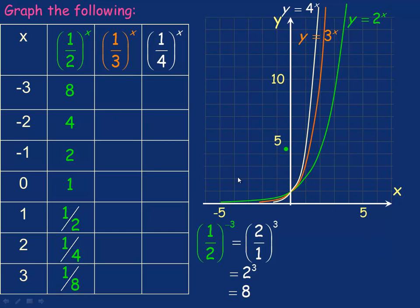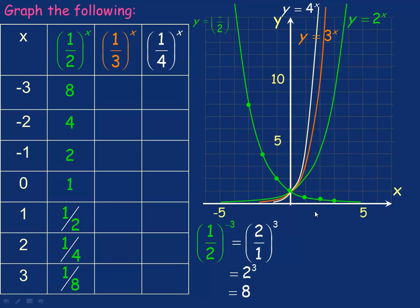Plotting all these points: negative 3, 8 — left 3 and up to 8. Negative 2, 4 would be right here. Negative 1, 2 would be right there. Zero, 1. One, 1/2 would be here. Two, 1/4 would be down here. And three, 1/8. Drawing a smooth curve between those is what y equals a half to the power of x looks like.